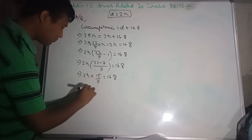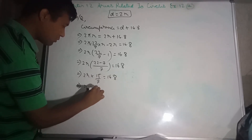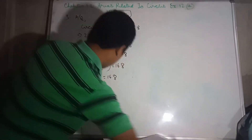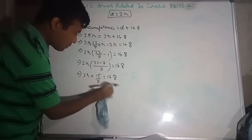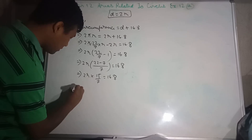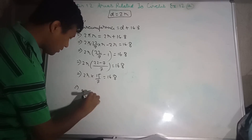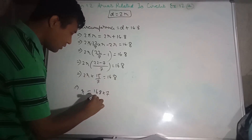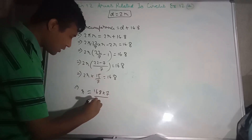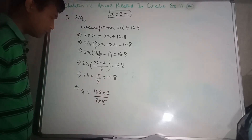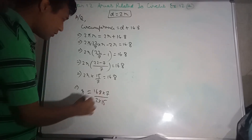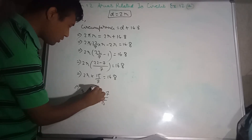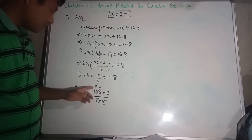This implies R equals 16.8 into 7 divided by 2 into 15. Dividing 16.8 by 2 gives 8.4. So R equals 8.4 into 7 divided by 15. Now 8.4 divided by 15 — 2 eights are 16, decimal point, 2 fours are 8. R equals 0.56 into 7. R equals 3.92 cm.